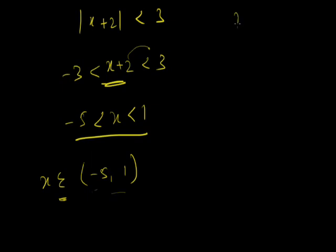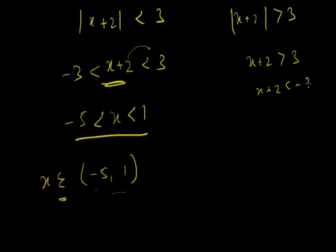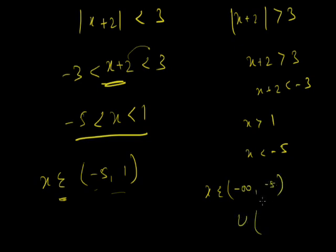For mod of x plus 2 greater than 3: it opens as x plus 2 is greater than 3 and x plus 2 is less than minus 3. The solution gives x is greater than 1 and x is less than minus 5. We write x belongs to minus infinity to minus 5, union, 1 to infinity — using open brackets throughout.